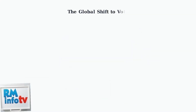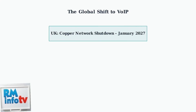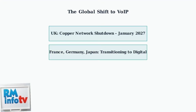The global telecommunications industry is undergoing a massive transformation as countries phase out traditional copper networks in favor of digital systems. The United Kingdom plans to switch off its copper network in January 2027. Countries like Estonia and the Netherlands have already completed this transition. Other major economies including France, Germany, and Japan are also winding down their traditional telephone networks in favor of internet-based systems.